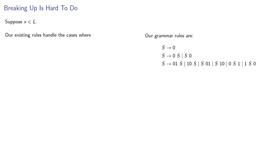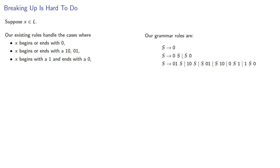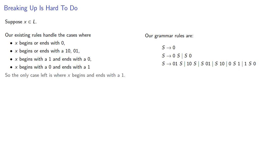So let's consider: suppose x is in our language. Our existing rules handle the cases where x begins or ends with 0, begins or ends with a 1-0 or 0-1 pattern, begins with a 1 and ends with a 0, or begins with a 0 and ends with a 1. So the only case left is where x begins and ends with a 1.